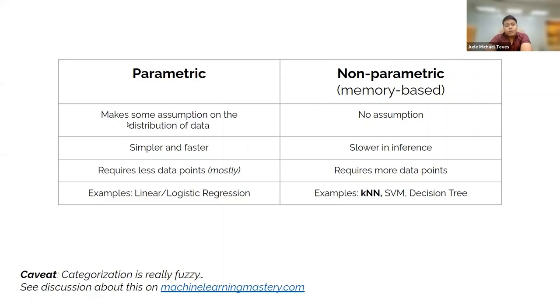Parametric models make some assumption on the distribution of data. Non-parametric, no assumption. Parametric models are simpler and faster. Non-parametric, slower in inference. Parametric models require less data points for the most part, and non-parametric ones require lots of data points. Parametric models - some examples are linear and logistic regression. Non-parametric: KNN, SVM, decision trees.